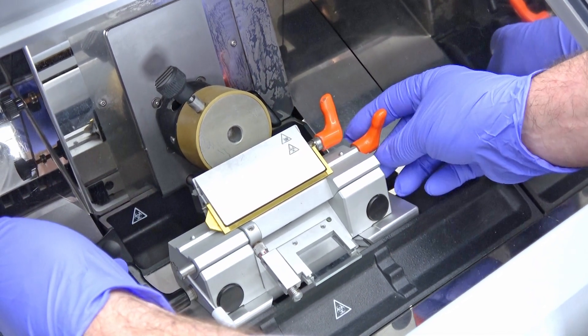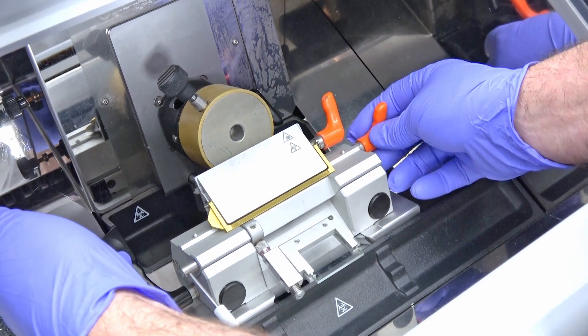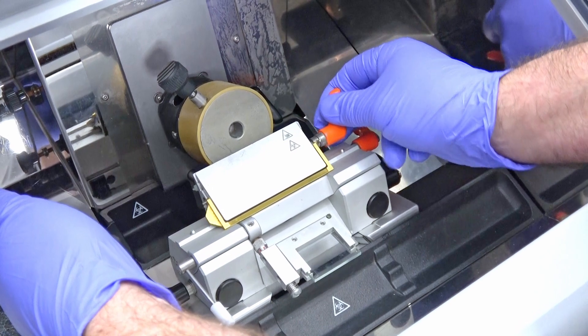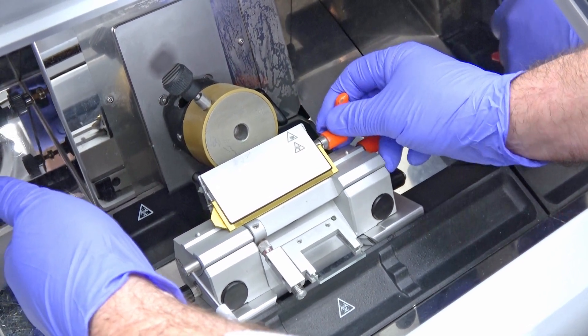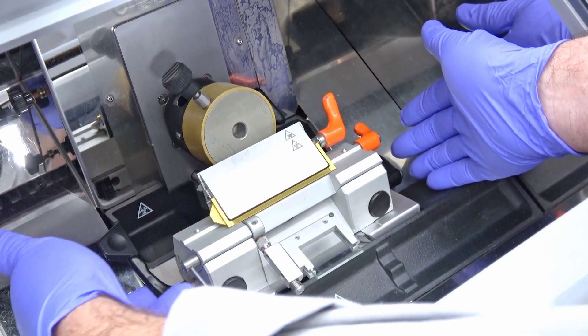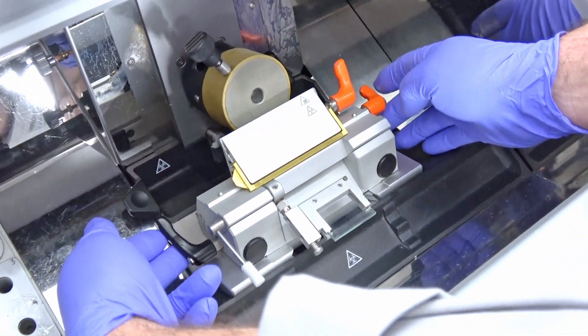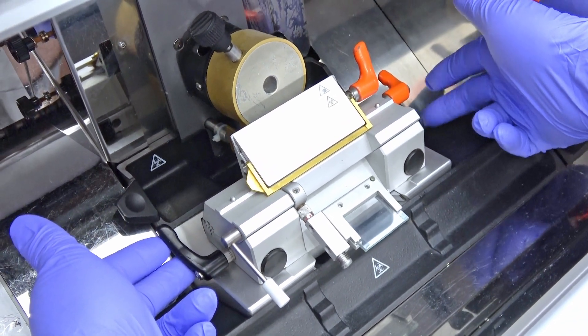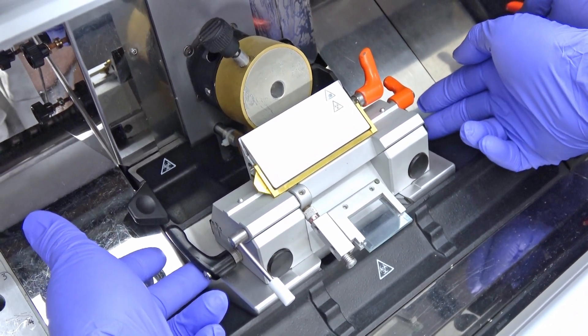When you tighten these you can also pull these out and then get the handles down so they're not sticking up and being annoying. Then you've got the knob on this side here. This is probably one of the most important knobs besides the other black handle.